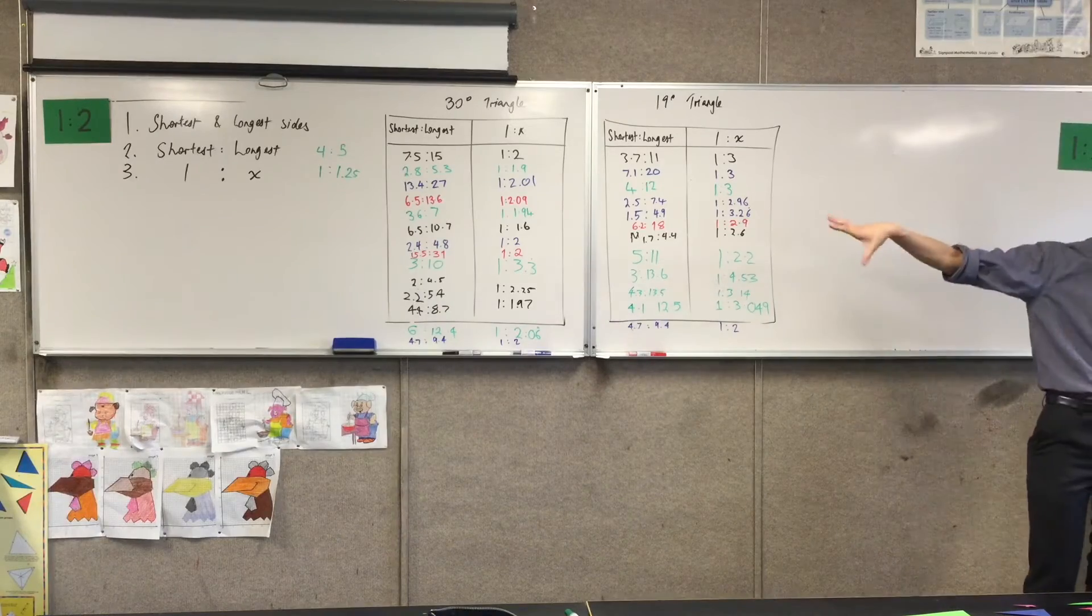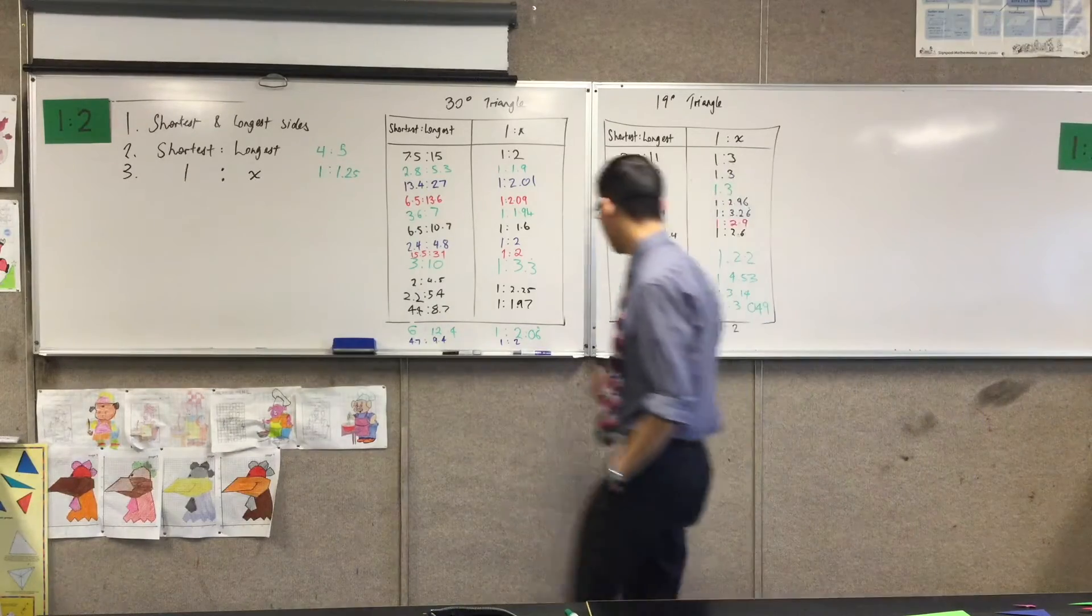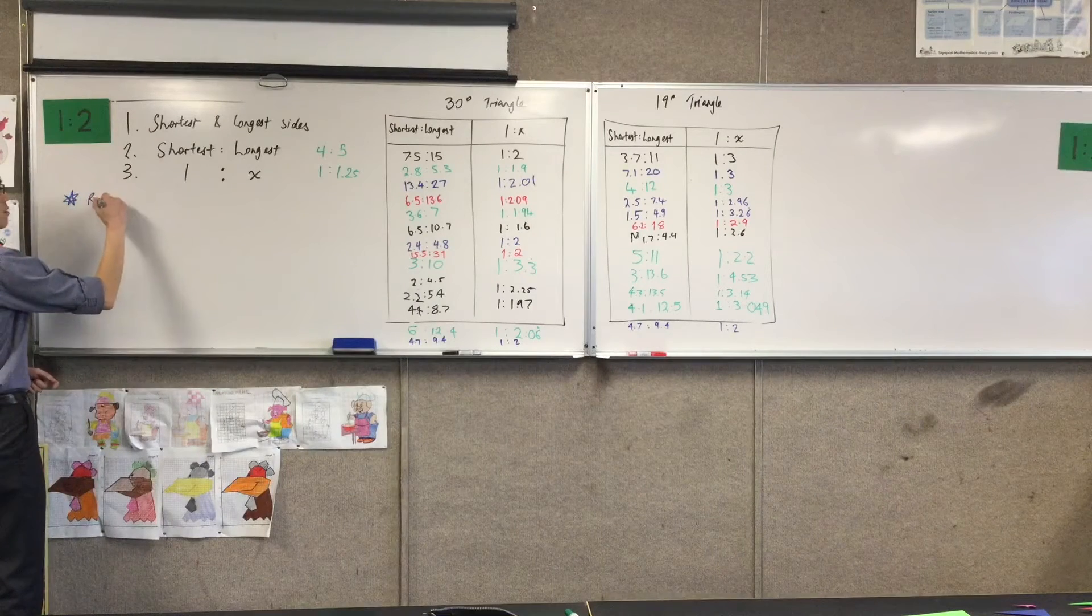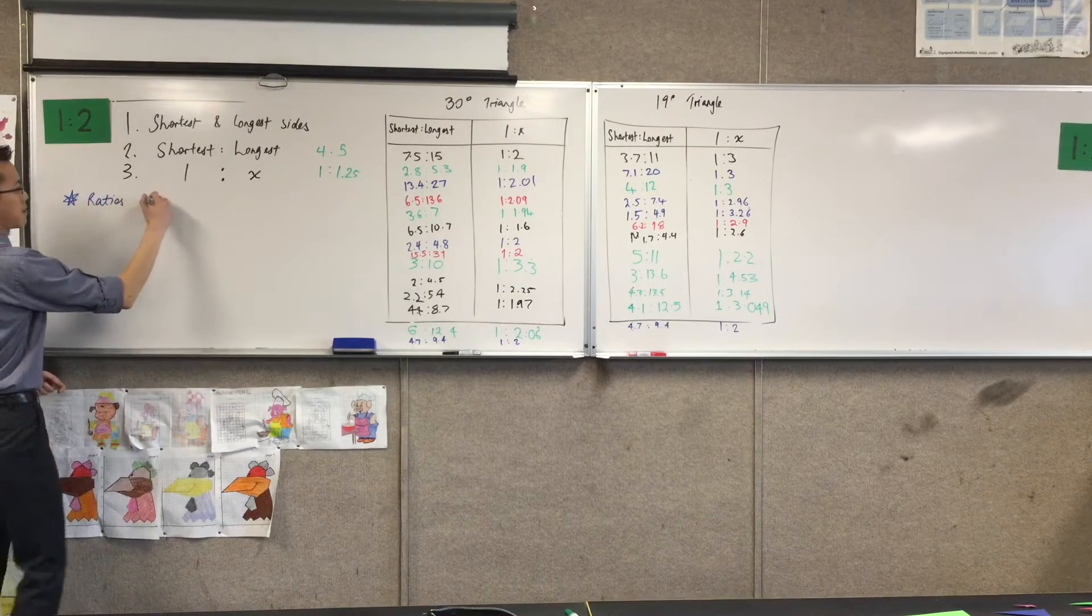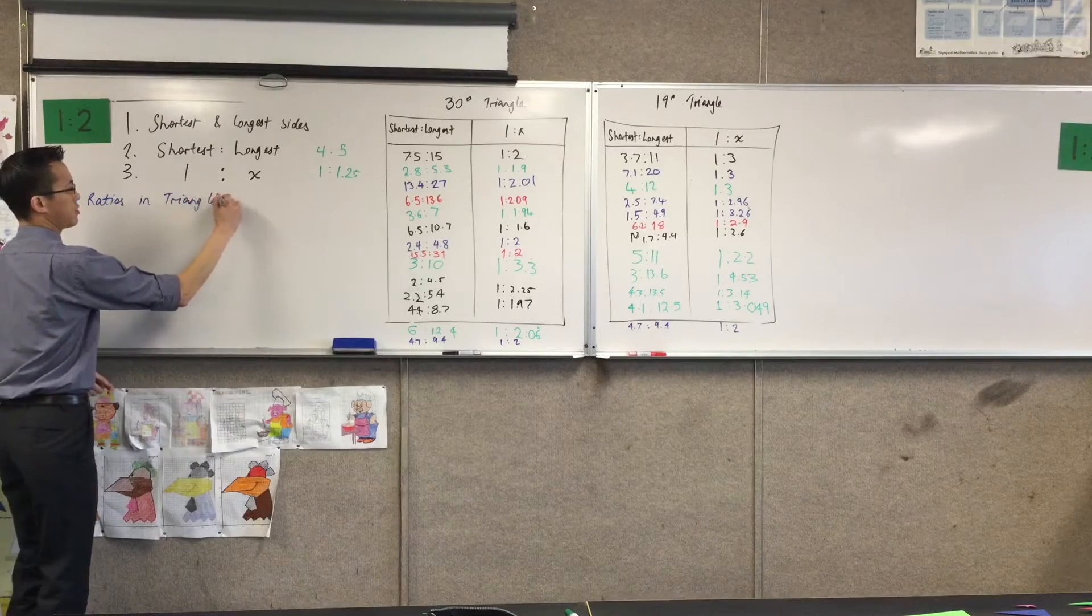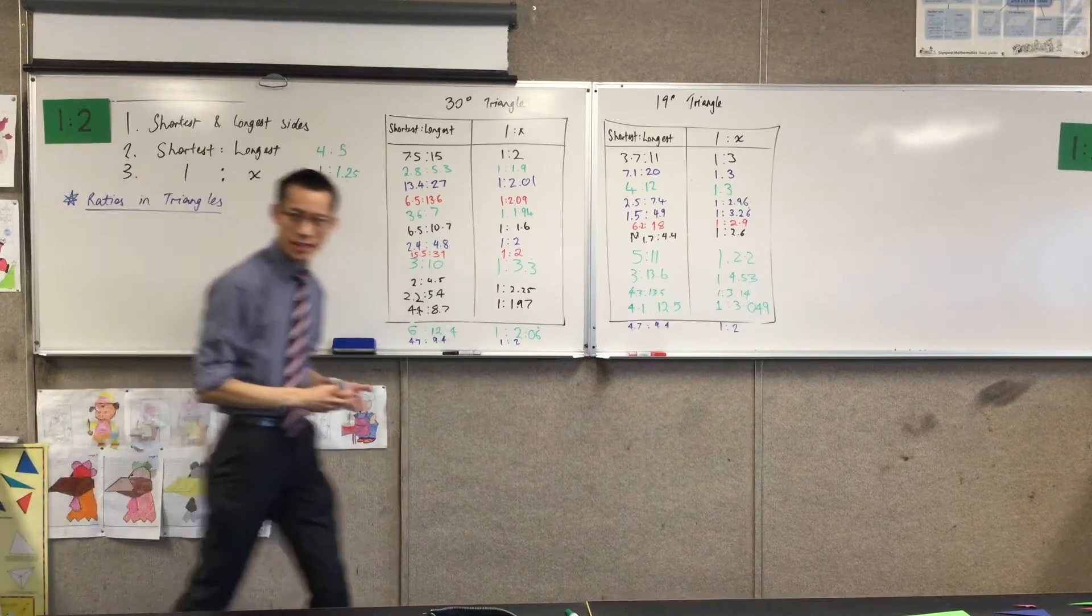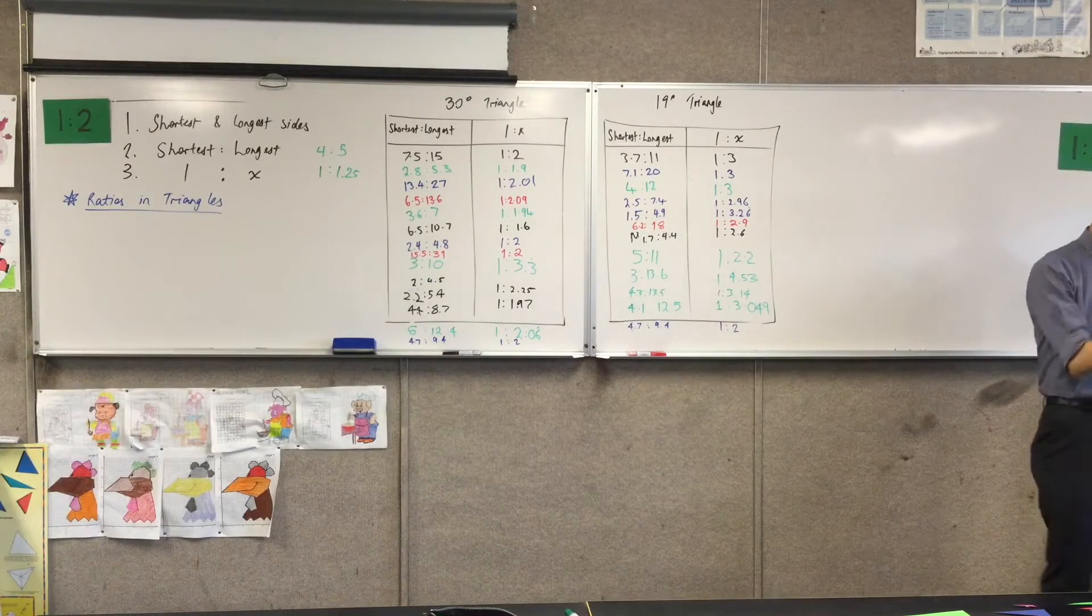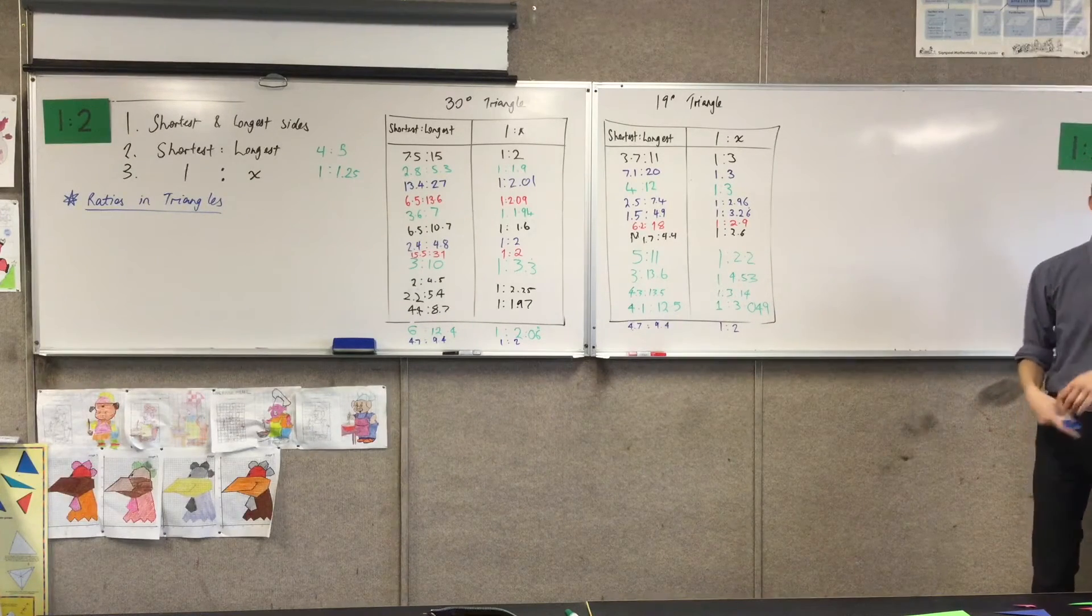So, what I want us to explore is, underneath where you've written all this, make a little subheading. The subheading is ratios in triangles. What we were comparing is all these different lengths, and then we measured all these out.